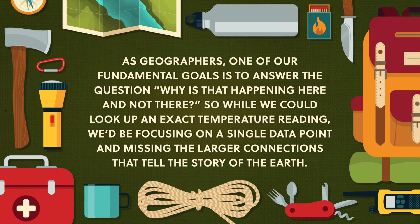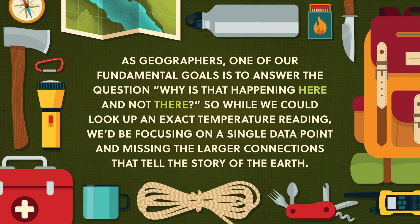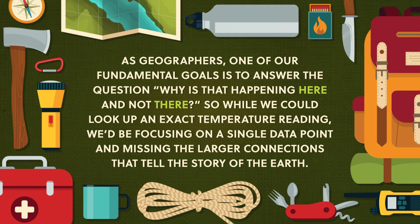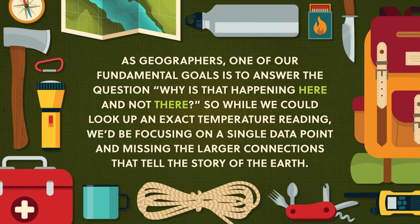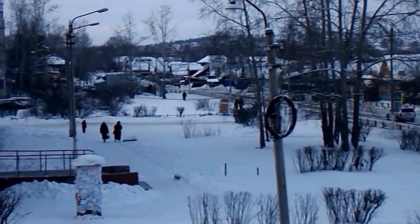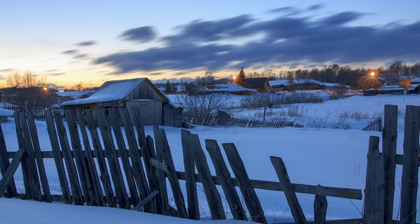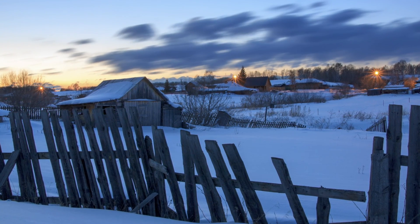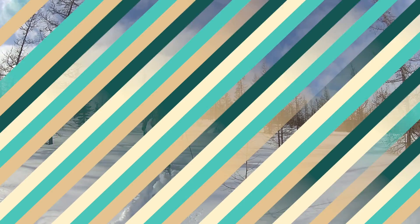As geographers, one of our fundamental goals is to answer the question: why is that happening here and not there? So while we could look up an exact temperature reading, we'd be focusing on a single data point and missing the larger connections that tell the story of the Earth. Siberia can claim the lowest temperature ever recorded where people actually live, but that alone doesn't tell us why it has such an enduring fascination as inhospitable, forbidding, and a place of exile.